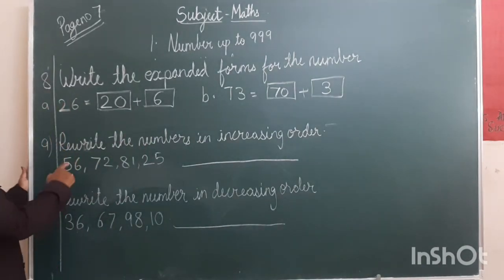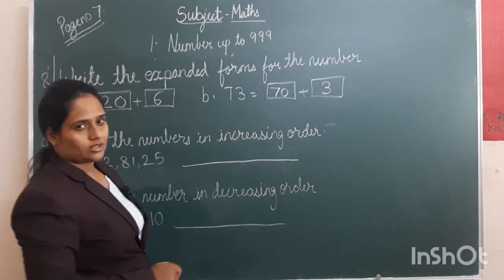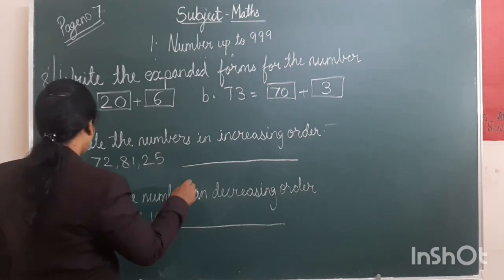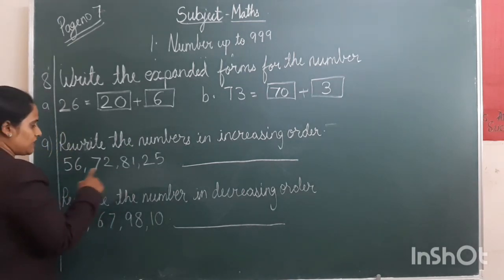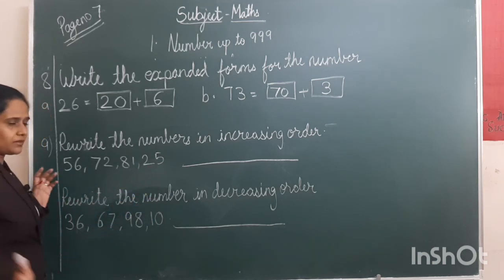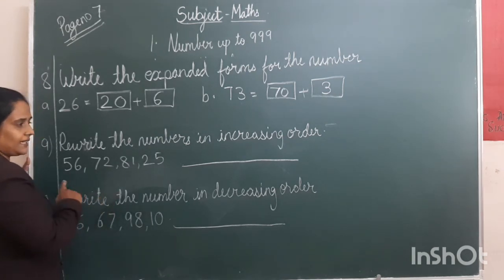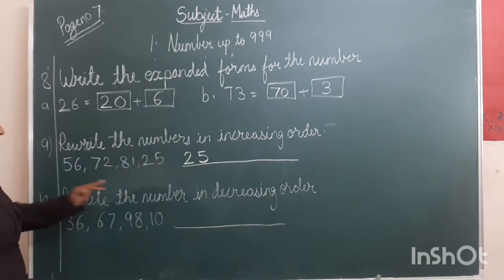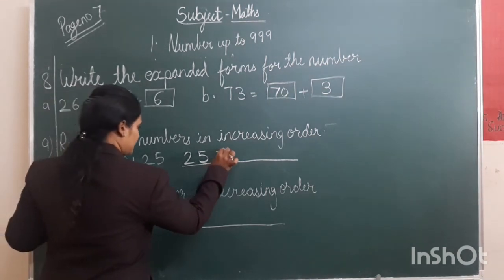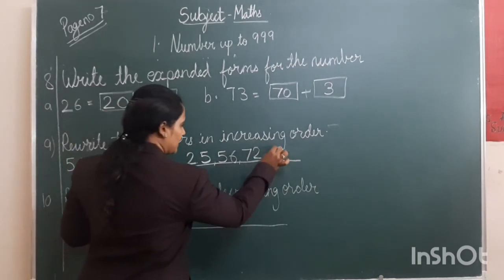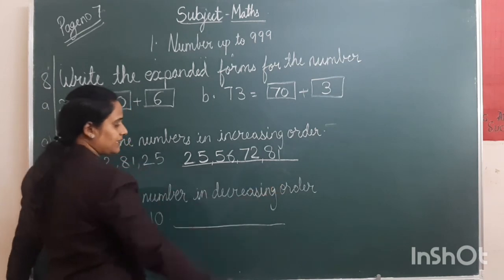Now question number 9: rewrite the numbers in increasing order. The numbers given are 56, 72, 81, 25. We have to write in increasing order, so first we write the smallest number, which is 25. After that 56, then 72, then 81. This way we have written the numbers in increasing order.